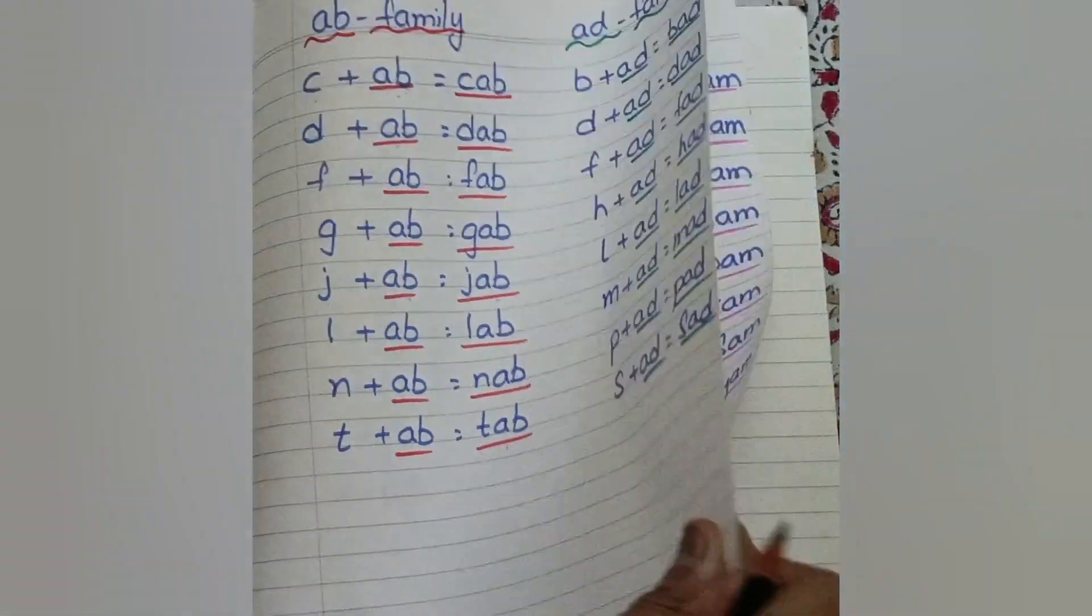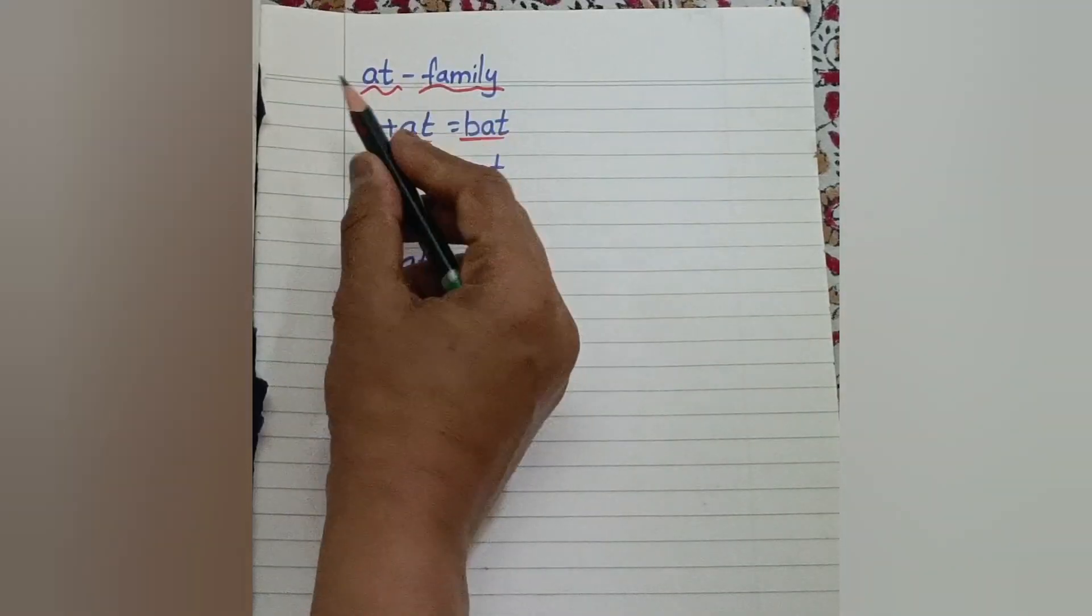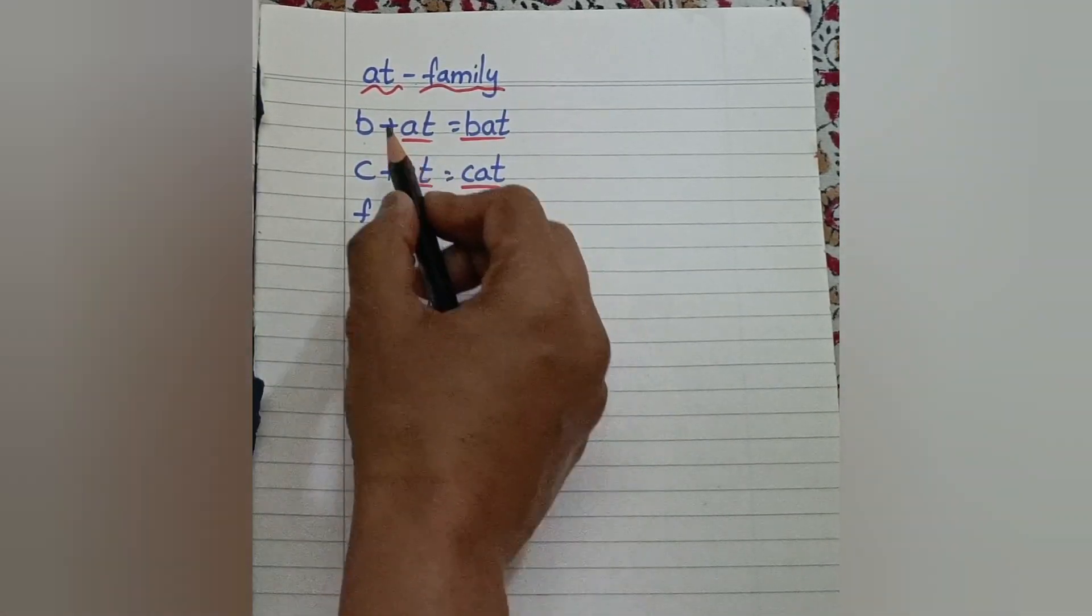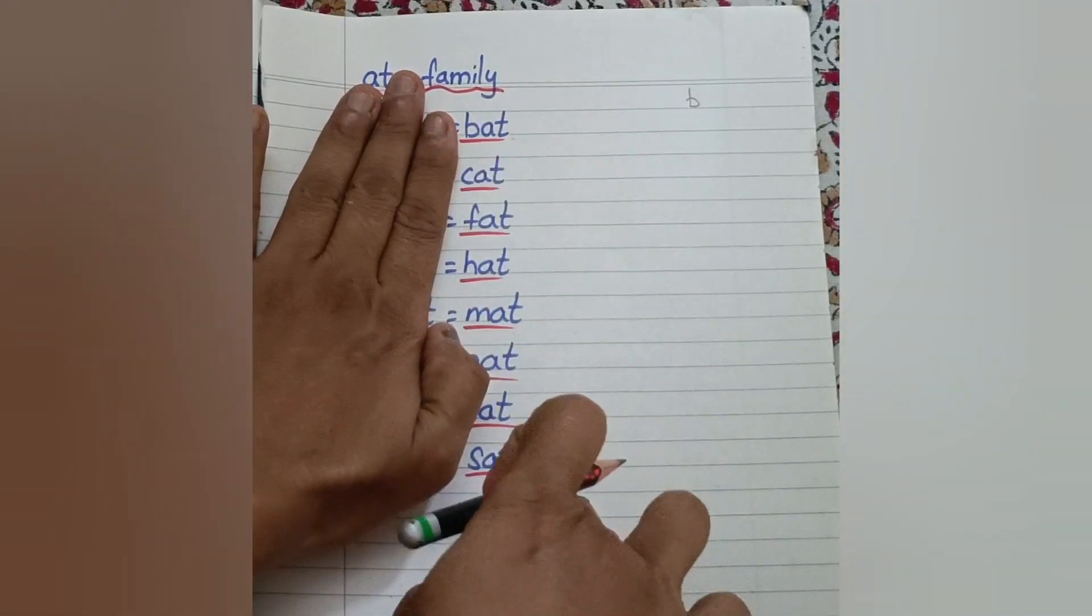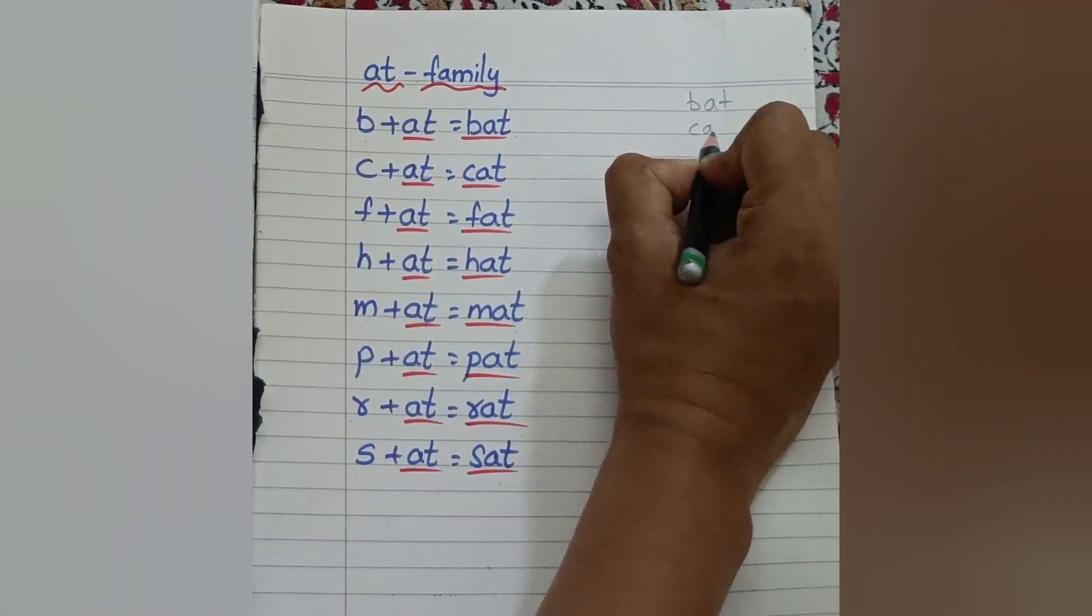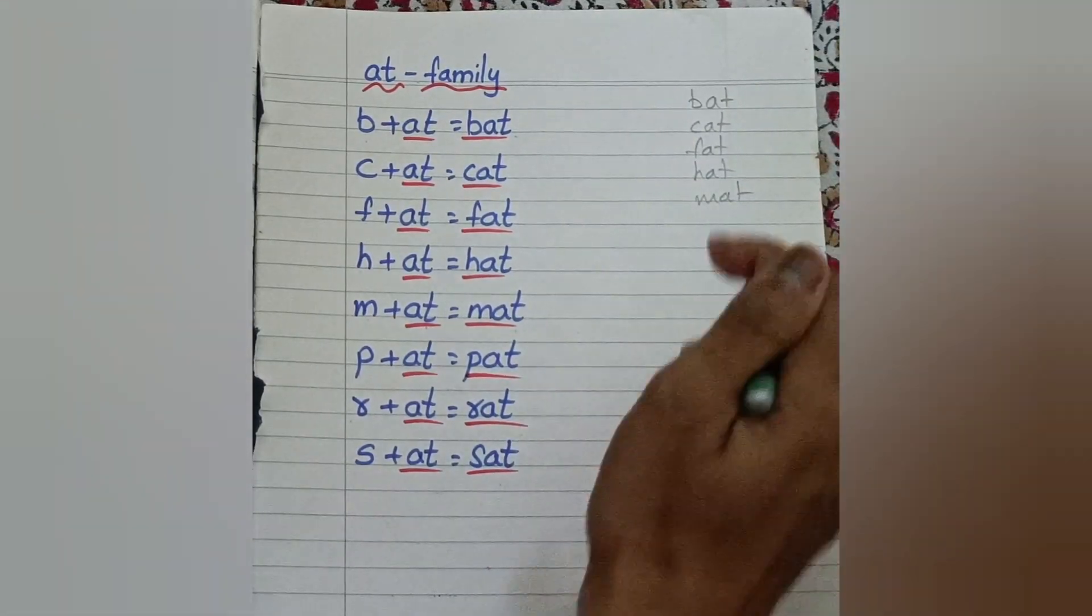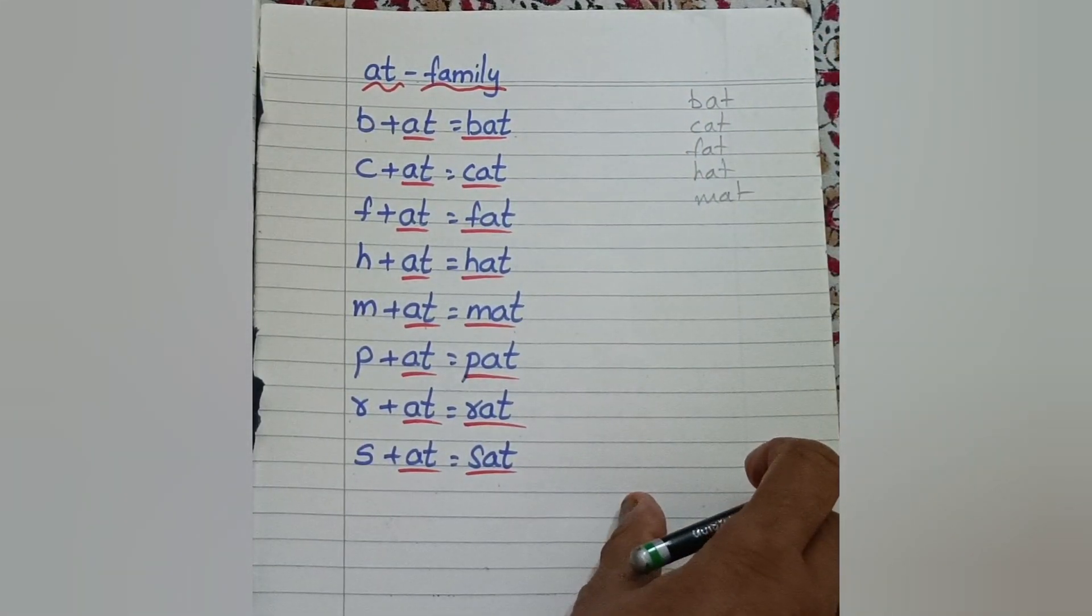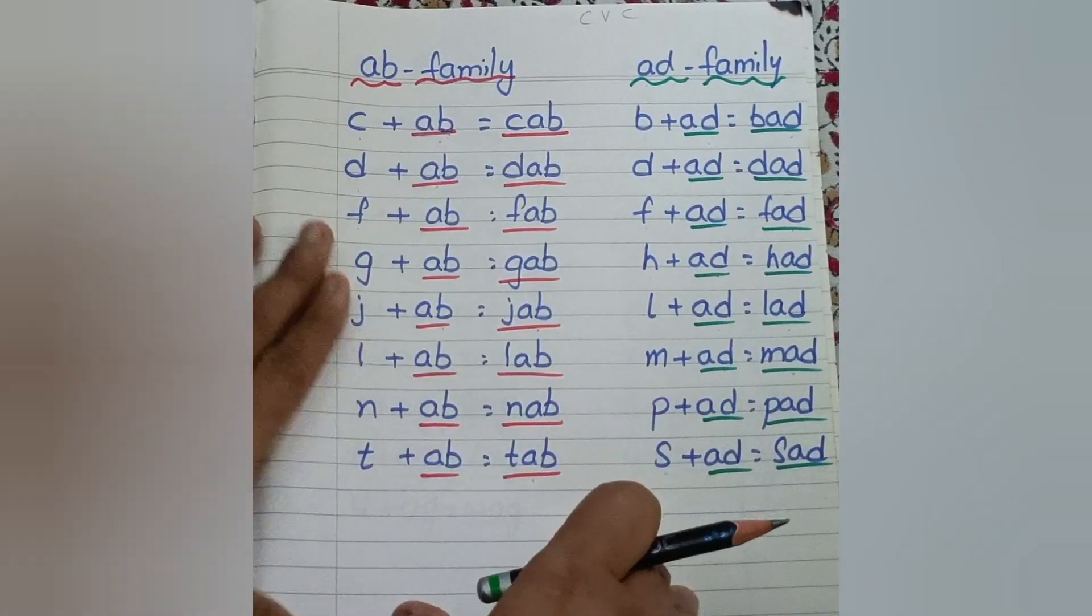So these are the A blending words - Ap family, At family, Am family, Ap and At families. After teaching all these separately, if the child is reading them directly, then later on you have to make a list like this, only this part. Bat, Cat, Fat, Hat, Mat, like this. First At family, Am family, you can write separately, then tell them to read directly. So these are the words of A family blending.